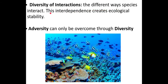Finally, there is diversity of interactions — the different ways species interact. The more species and the more structure you have in an ecosystem, the more diversity of interactions there will be. With just two species, there's only one possible interaction. With 12 species, there's an exponential increase in the ways those species can interact, creating a much more complex system.